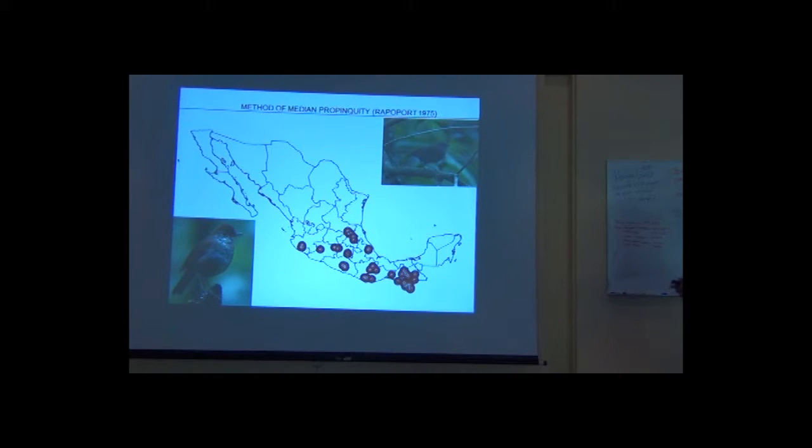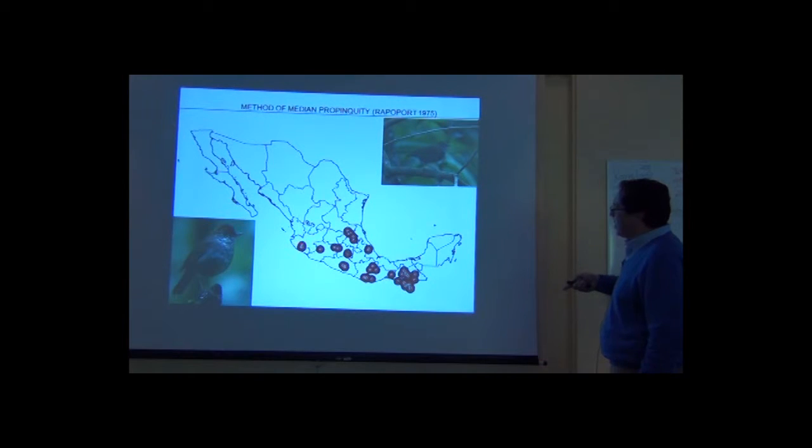Other researchers prefer to use a method that consists in generating buffers around the distributional data points that may indicate the size and shape of the distribution of the species based on these data points. This method is called the median propinquity method. It was performed by an Argentinian guy Rappaport back in the 70s. And this method consists in generating a buffer value based on the distances of the points between them. What you do is take measurements of the distance of all the points generate a median and once you have the median and the standard deviation plot that standard deviation around the points and then you generate different shape of a hypothesis distribution hypothesis.